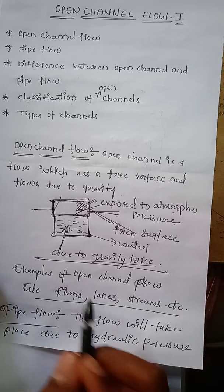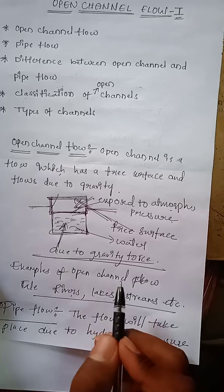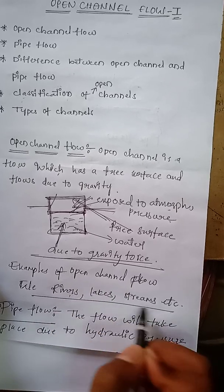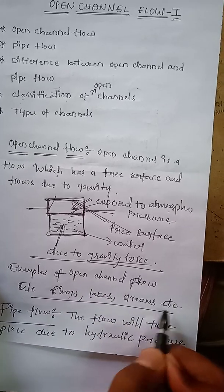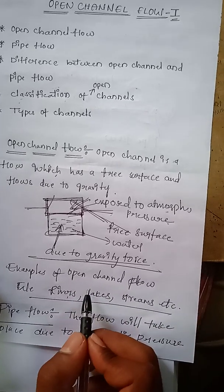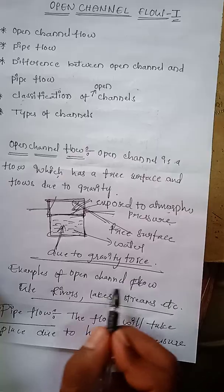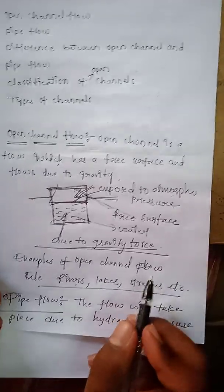Examples of open channel flow are rivers, lakes, and streams.